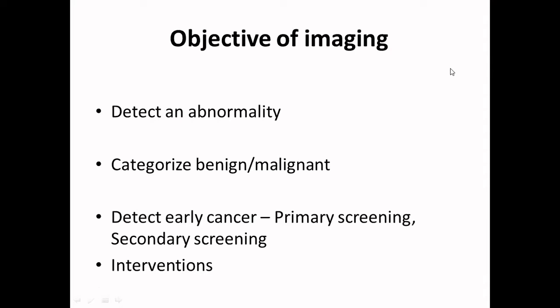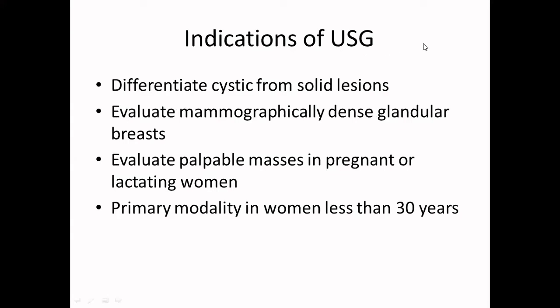Why do we image? First, to detect if there is an abnormality, and if there is one, to categorize it as benign or malignant. The basic concept of breast imaging today is to detect early malignancy through primary or secondary screening. Imaging is also used to diagnose benign lesions like breast abscess, fibroadenomas, and galactoceles, and definitely imaging helps in guiding interventions.